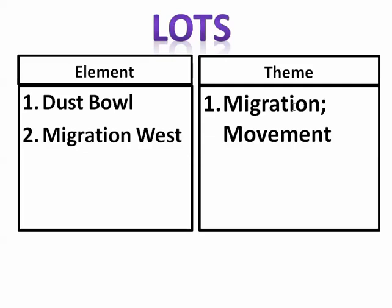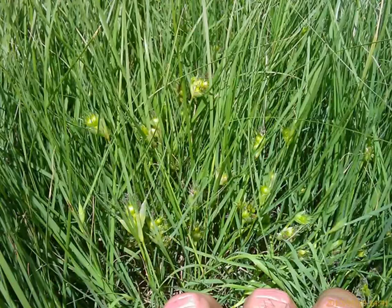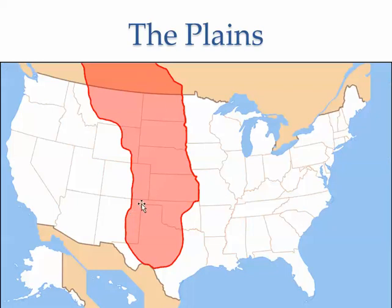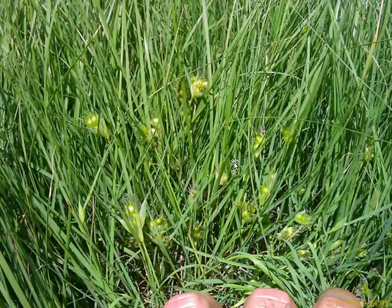Our focus is the Dust Bowl and migration west — these are our key elements. On the Great Plains, in the area where the Dust Bowl is going to occur — Oklahoma, Texas, Colorado, all around that area — there used to be a bunch of buffalo grass growing there, with thick soil that held a lot of moisture.